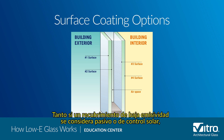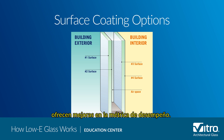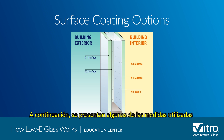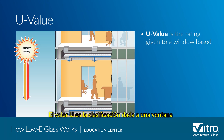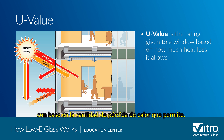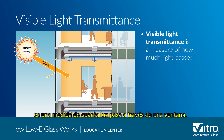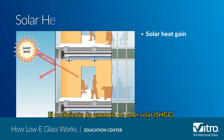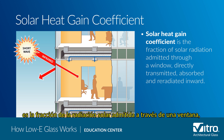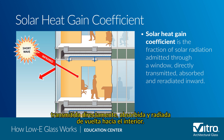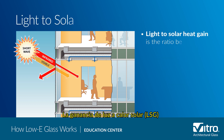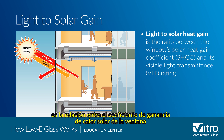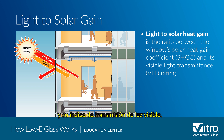Whether a low-e coating is considered passive or solar control, they offer improvements in performance metrics. U-value is the rating given to a window based on how much heat loss it allows. Visible light transmittance is a measure of how much light passes through a window. Solar heat gain coefficient is the fraction of solar radiation admitted through a window — directly transmitted, absorbed, and re-radiated inward. The lower a window's solar heat gain coefficient, the less solar heat it transmits. Light to solar heat gain is the ratio between the window's solar heat gain coefficient and its visible light transmittance rating.